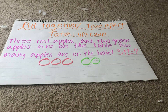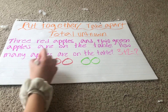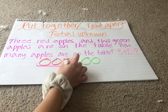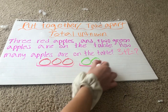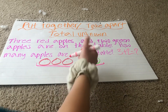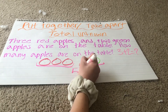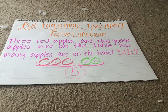How many are all together? We've got one, two, three red and one, two green. So when we add them together: one, two, three, four, five. We have five total apples on our table.